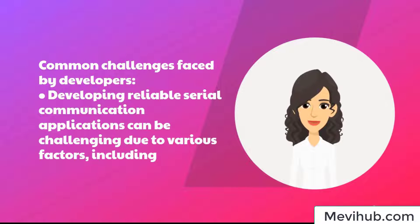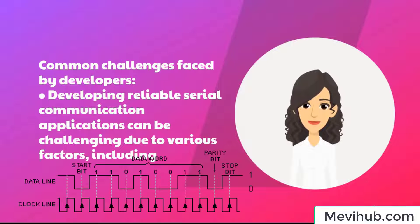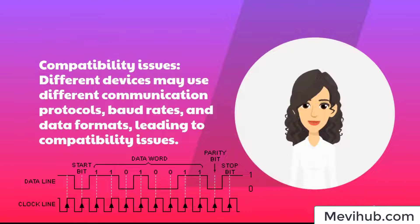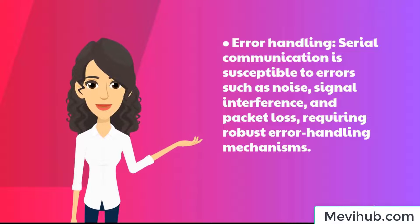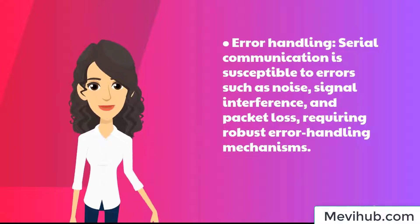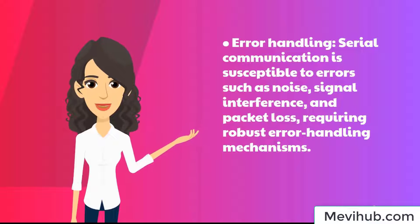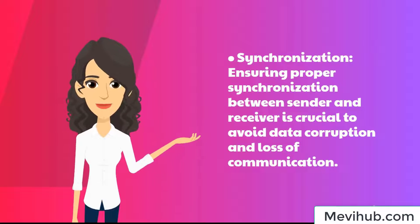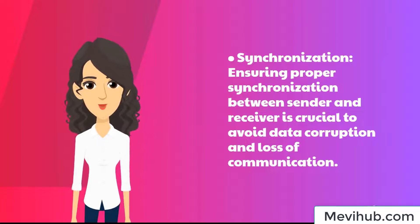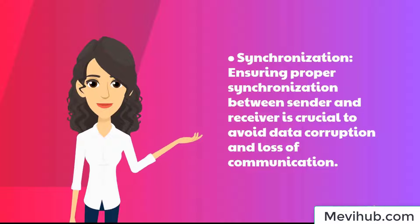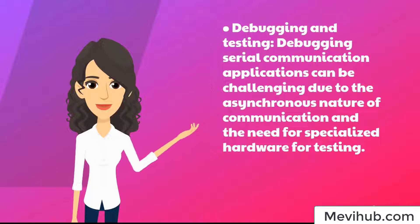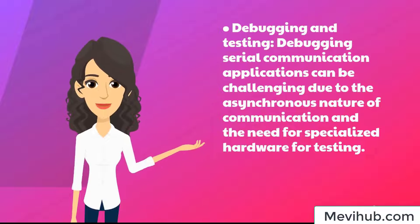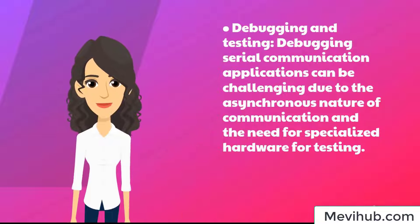Developing reliable serial communication applications can be challenging due to various factors, including: Compatibility issues — different devices may use different communication protocols, baud rates, and data formats, leading to compatibility issues. Error handling — serial communication is susceptible to errors such as noise, signal interference, and packet loss, requiring robust error handling mechanisms. Synchronization — ensuring proper synchronization between sender and receiver is crucial to avoid data corruption and loss of communication. Debugging and testing — debugging serial communication applications can be challenging due to the asynchronous nature of communication and the need for specialized hardware for testing.